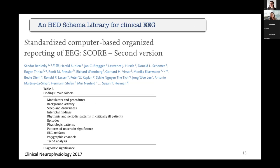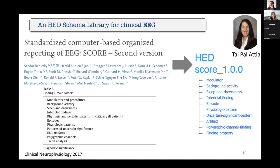Scott had already talked to some of the people on the team, like Pedro Valdes-Sosa, to use SCORE — which is a Standardized Computer-based Organized Reporting for EEG — to report types of EEG activity. For example, modulators and procedures, sleep stages, interictal findings, EEG artifacts. This was nicely described in tables in a paper and in a commercial software package. But a commercial software package or paper tables are not accessible to most people in science. So we had to translate this into an HED library schema.